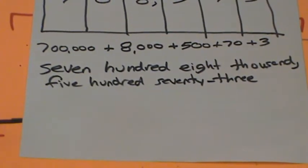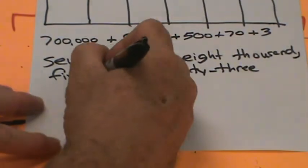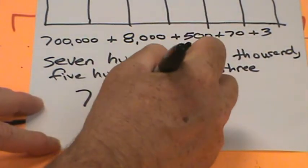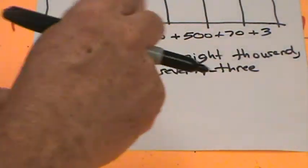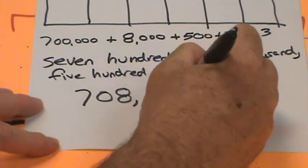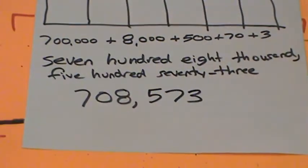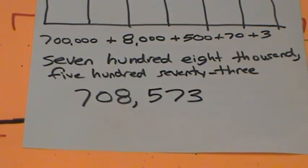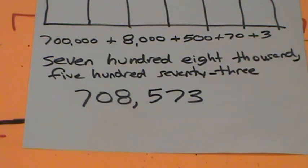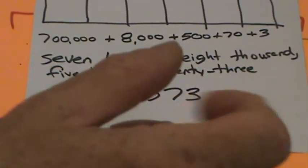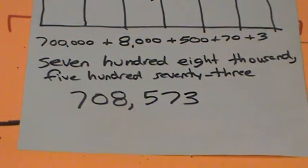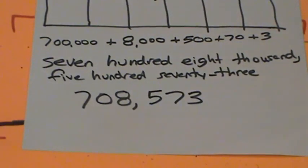Now let's write this in standard form. We would say seven hundred eight thousand, comma — that's my thousands group — five hundred seventy-three. And there we have it. What a lesson! You did such a great, fantastic job. It's time to take a little break, stretch your legs, stretch your back, and get ready for the problem set.